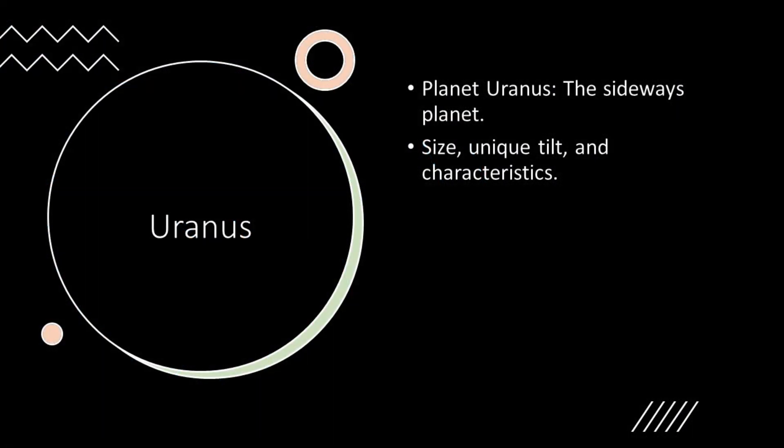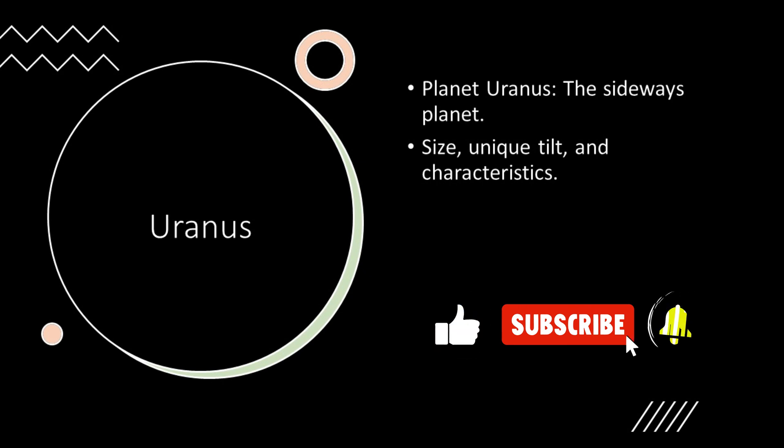Uranus, the tilted planet, defies the conventions of planetary rotation, spinning on its side like a cosmic somersault. Its pale blue hue, indicative of methane in its atmosphere, sets it apart as a unique member of the solar system family. The mysteries of Uranus, from its unusual tilt to its enigmatic composition, fuel scientific curiosity and drive our quest to understand the complexities of planetary dynamics.